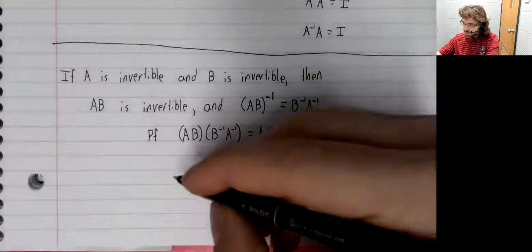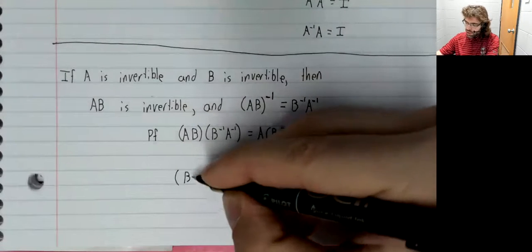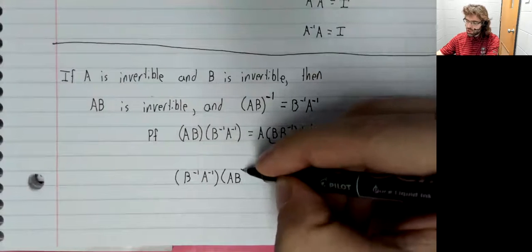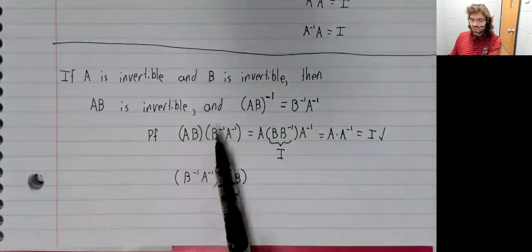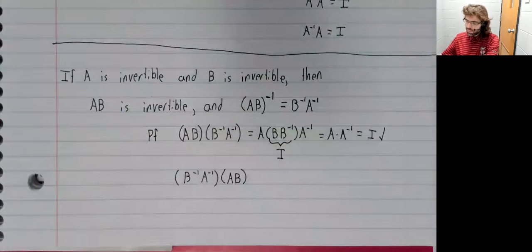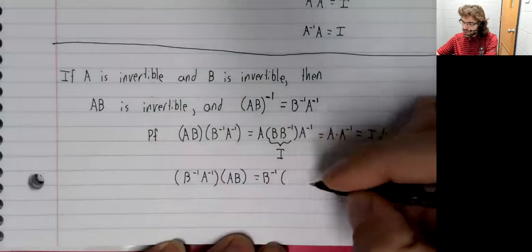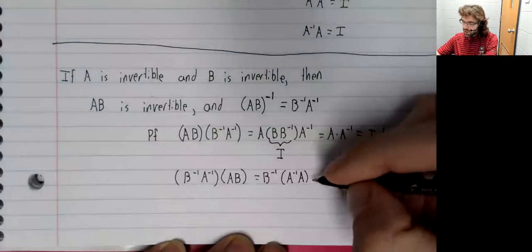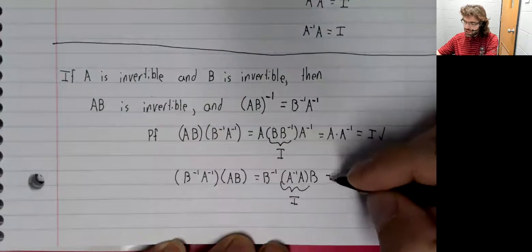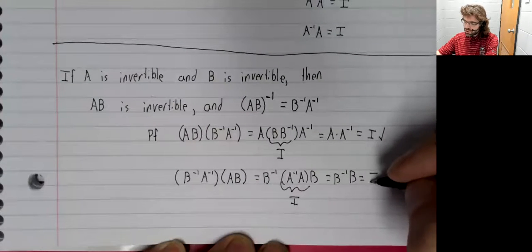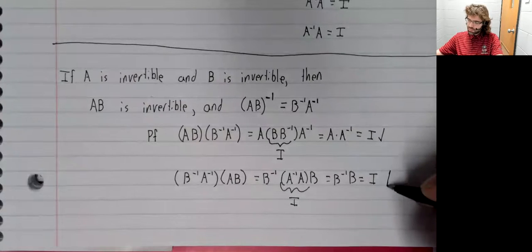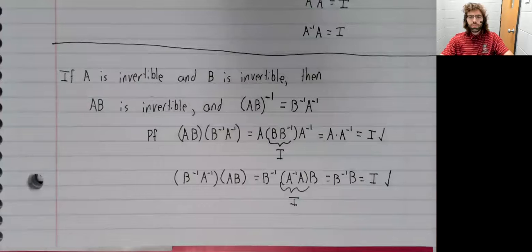To really complete this proof, we actually need to do two products. Remember that multiplication is not commutative. So just because this equals I, it doesn't automatically follow that this should equal I. However, the exact same argument we made continues to work. Move around the parentheses. This is the identity. Multiplying by the identity doesn't do anything. And this is I. So that's that theorem proved.